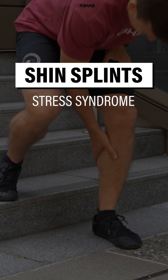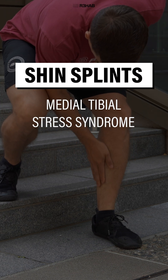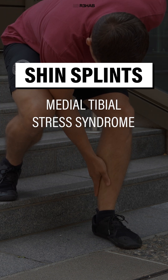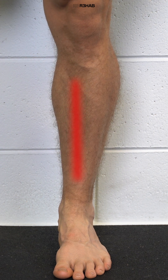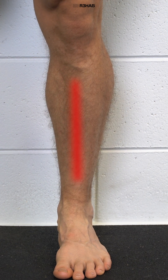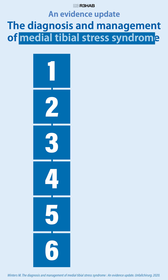In the medical community, shin splints are referred to as medial tibial stress syndrome, which is a fancy way of saying that the inside of your shin hurts. A stepwise process for assessing the condition was developed by Winters et al. in 2017.